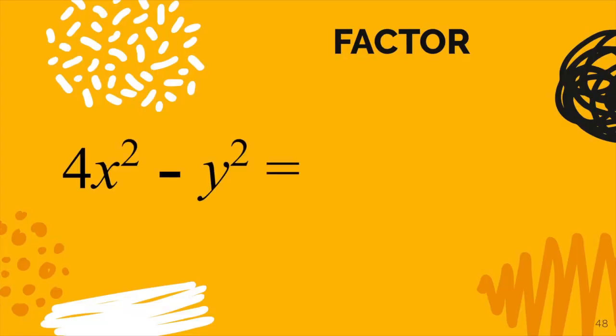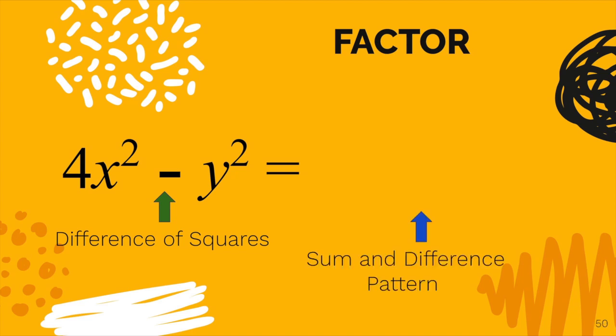Now let's look at a second example today. Given 4x squared minus y squared, first thing you want to notice that this is just a binomial and it is a difference of two perfect squares because 2x times 2x is 4x squared and y times y makes your y squared. So we're going to be able to factor this into a sum and difference pattern. So we can set up our two parentheses.